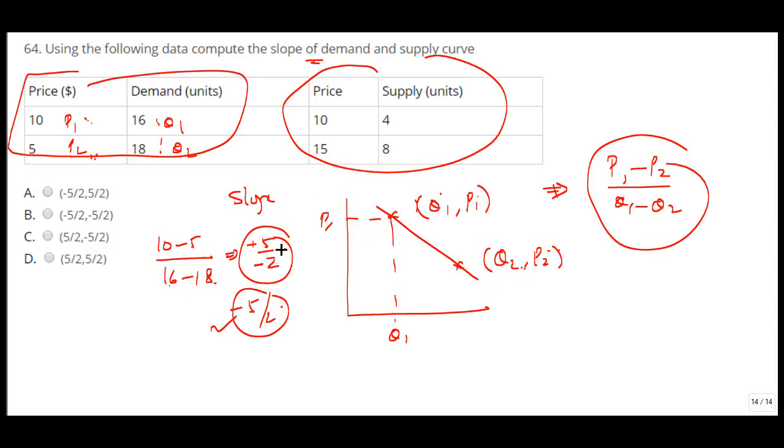So it is minus 5 by 2 and the supply curve it will be same way we can say it is p1 p2 q1 q2. So we can say p2 minus p1 by q2 minus q1 that is 15 minus 10 divided by 8 minus 4. So this is plus 5 and this is 4. So it should be actually 5 by 4.